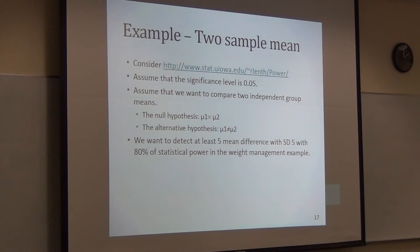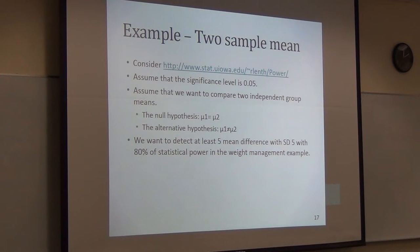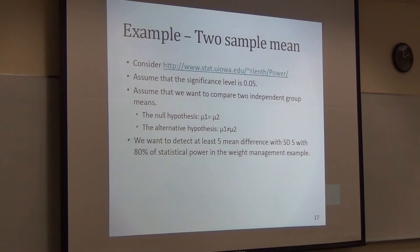As Lexi introduced, we need several components to calculate the power, depending on your experimental design. I want to start with a two-sample mean example as Lexi described. The first component is the significance level, which means type one error. When the null hypothesis is true — for example, group A equals group B — there is always a possibility that you partially reject the null hypothesis. That's the type one error. Typically from experience, we set it up as 0.05, though 0.01 is also common.